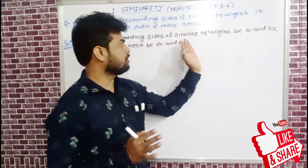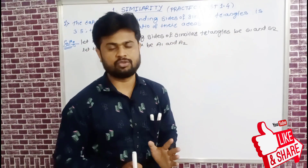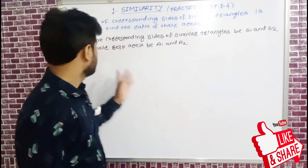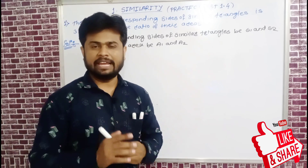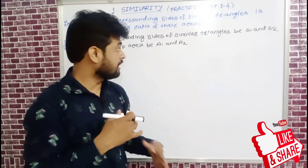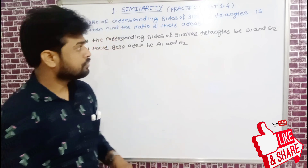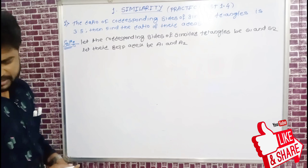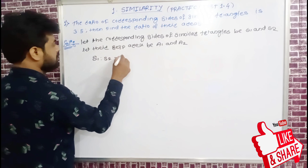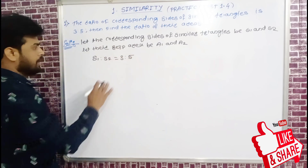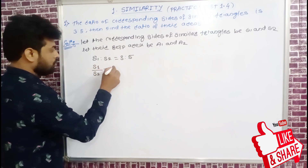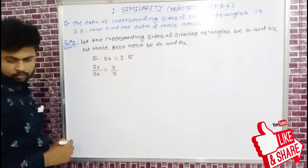Let the corresponding sides of similar triangles be s1 and s2, denoted by sides of two similar triangles. Let their respective areas be a1 and a2. The ratio of sides is s1 upon s2 equal to 3 upon 5.